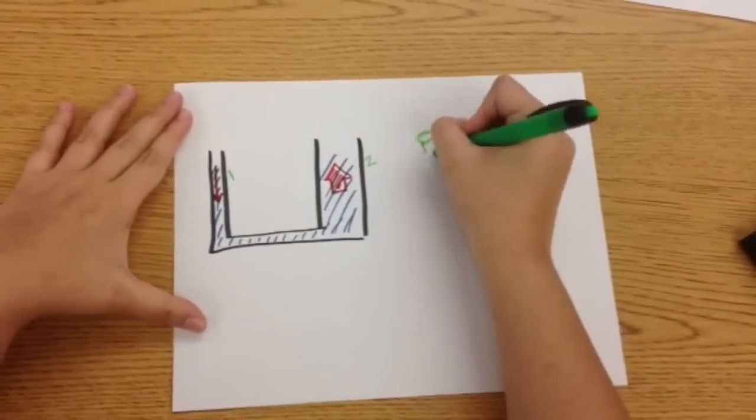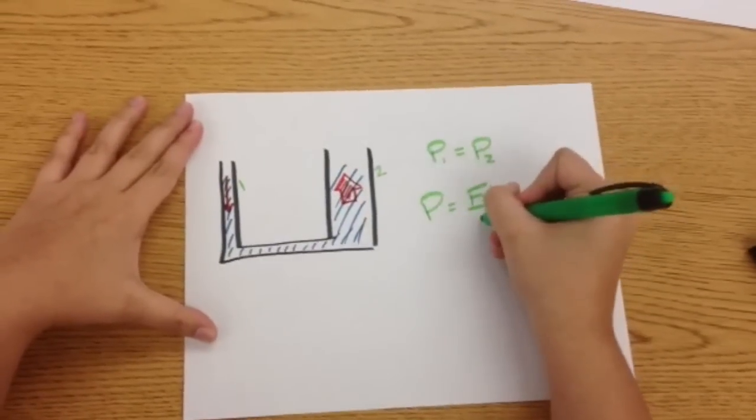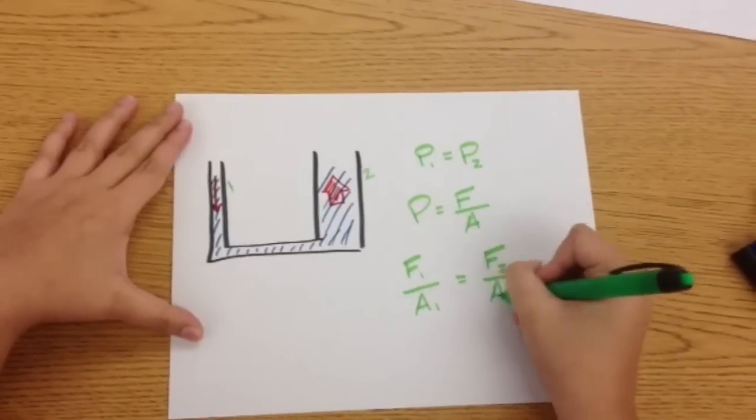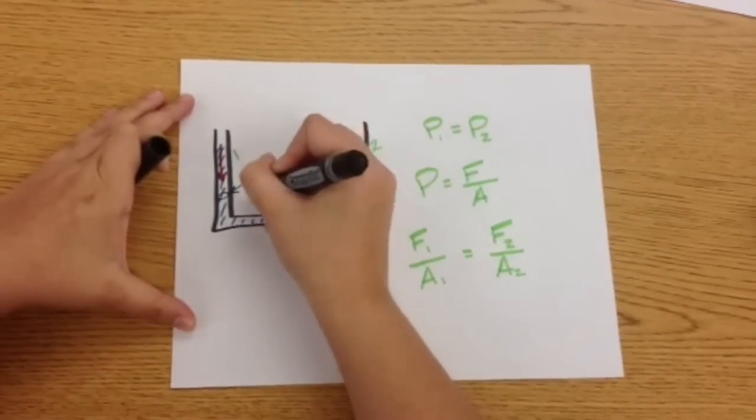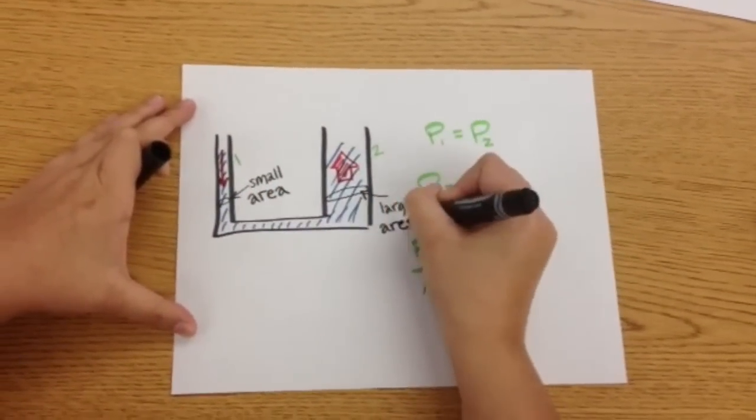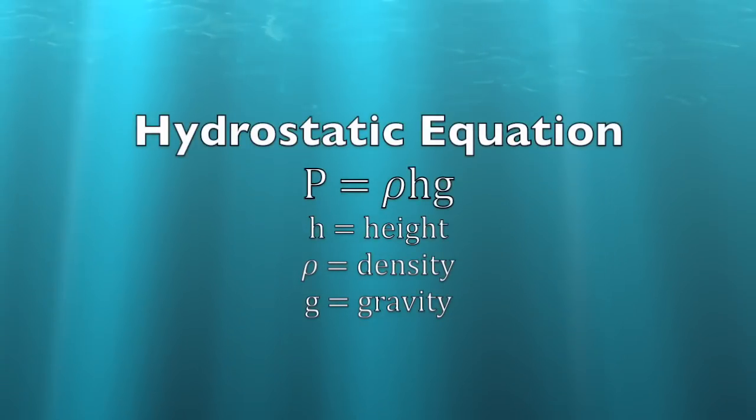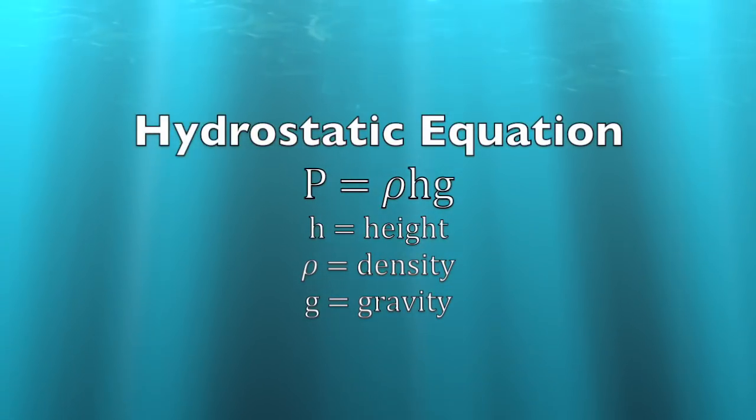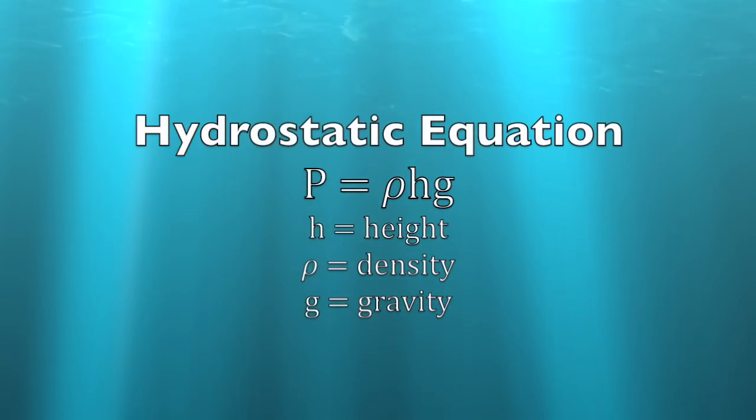Note that pressure varies with depth, so setting the respective forces over areas equal only works at the same height. If the points of interest are at different heights, you must also take into account the hydrostatic equation, which says that pressure equals height times density times gravity.